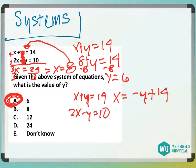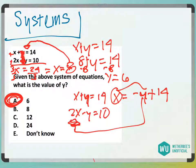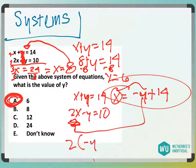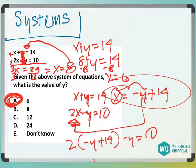Now I know that x equals this, so I can substitute this negative y plus 14 in for here. So I do 2 times x, and here we have that x is negative y plus 14. And then we'd have minus y equals 10.